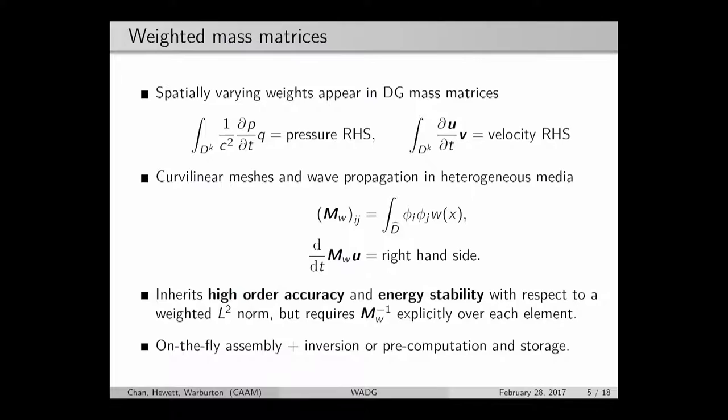These cause us to have to deal with weighted mass matrices. You can think of the DG formulation as basically having some right-hand side for velocity and pressure, and then you have this integral involving the time derivative and the wave speed as well. This translates into a weighted mass matrix which lives next to the time derivative term, and we have to invert this at every single time step.